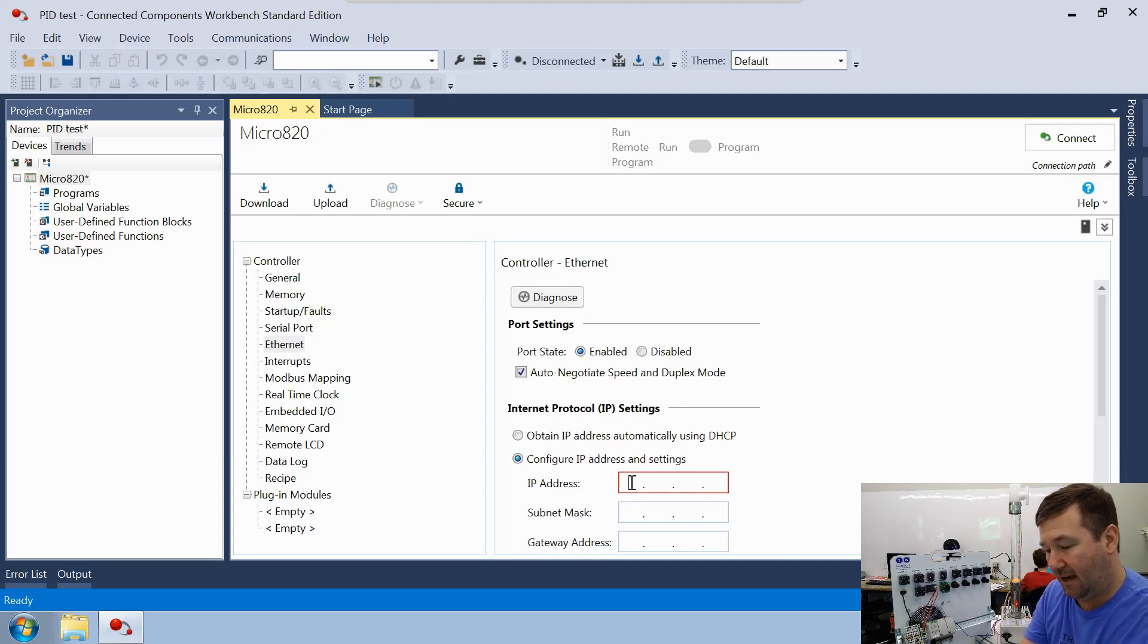So we're going to put it at 192.168.1.10 with a subnet of 255.255.255.0.